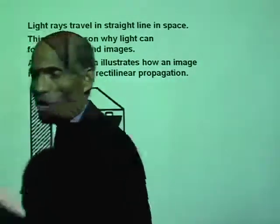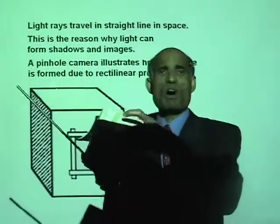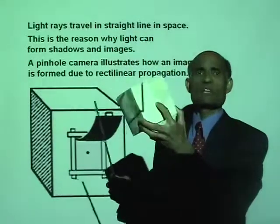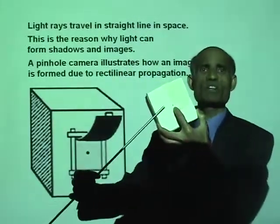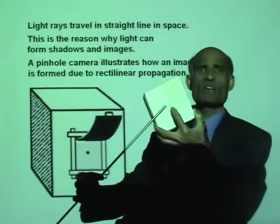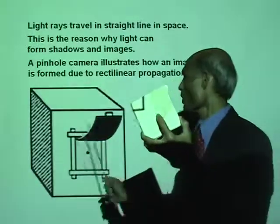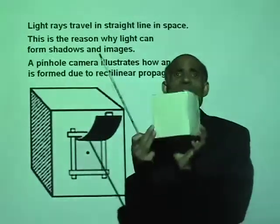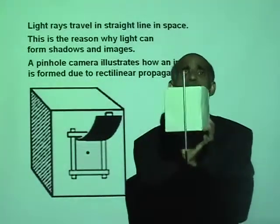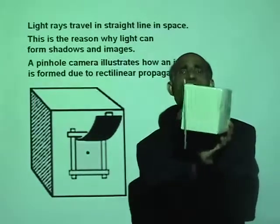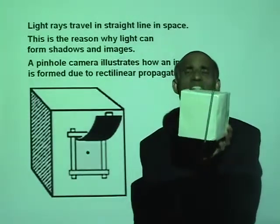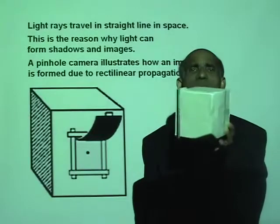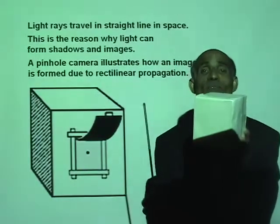Here I have a box — a paper box. I just took a paper box and made a hole. Can you see the hole at the center here? Make a small hole, and on the other side use a translucent paper. Take a piece of paper, put some oil on it.